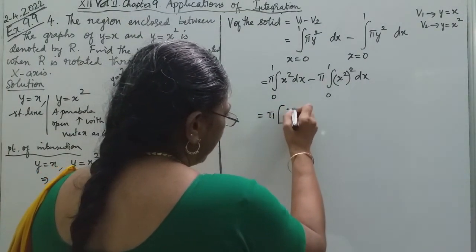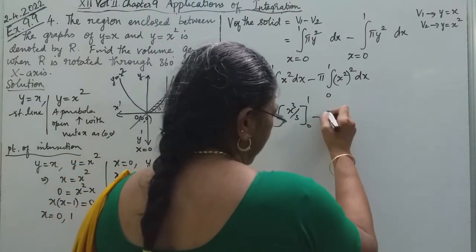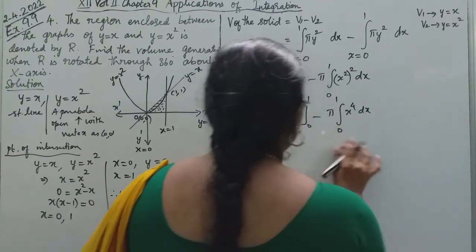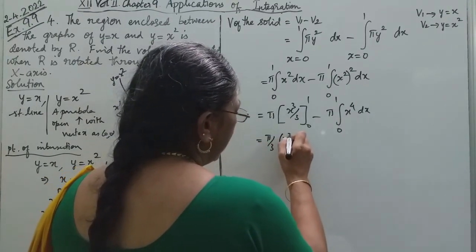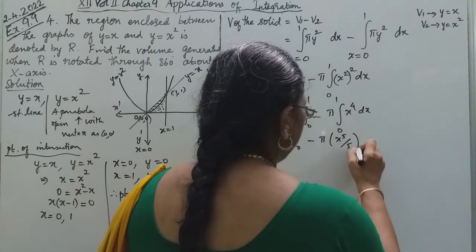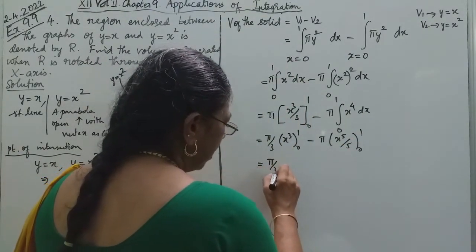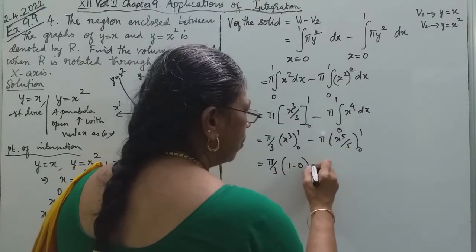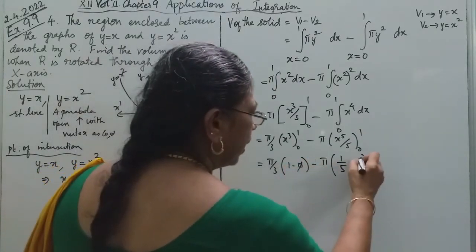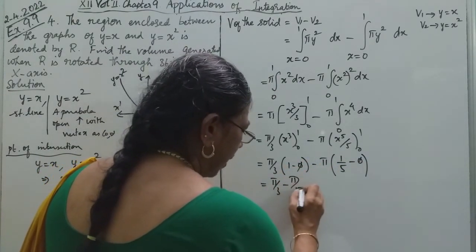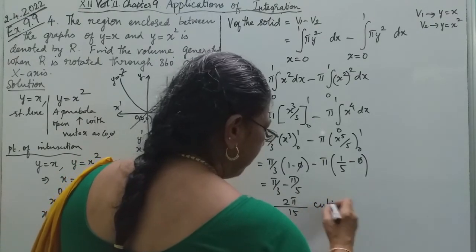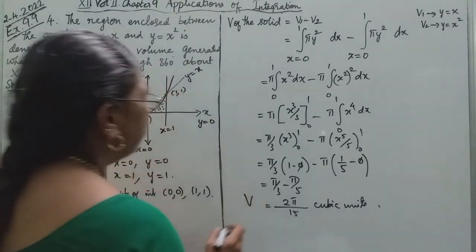Integrating: pi times x-cubed over 3 from 0 to 1, minus pi times x to the power 5 over 5 from 0 to 1. This gives pi over 3 times (1 minus 0) minus pi times (1 over 5 minus 0), which equals pi over 3 minus pi over 5. Taking LCM as 15, this gives 5pi minus 3pi over 15, which equals 2pi over 15 cubic units. This is the volume of the solid generated.